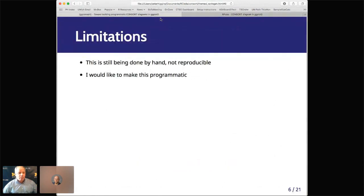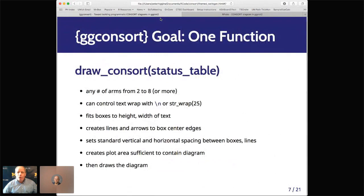And the goal is to end up with something like a function, like draw a consort, and an argument that's a status table, a standard data table that you can use to extract all this information. And ideally, it worked with any number of arms, it would have nice text wrapping, so the boxes don't get too wide, and fit boxes to the appropriate height and width of text, draw the lines and arrows to the right places, set spacing appropriately between boxes and lines, and draw the diagram.